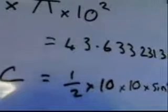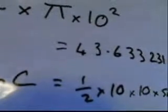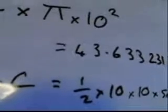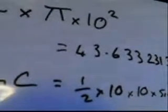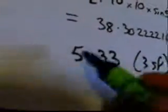So all I now need to do is take away 38.30 etc. from 43.633. So I'm going to do that now. And that's going to give me an answer of 5.33 to three significant figures.